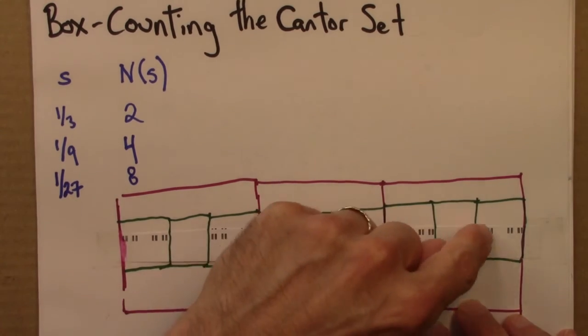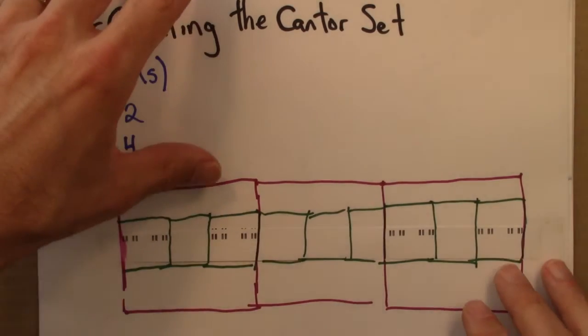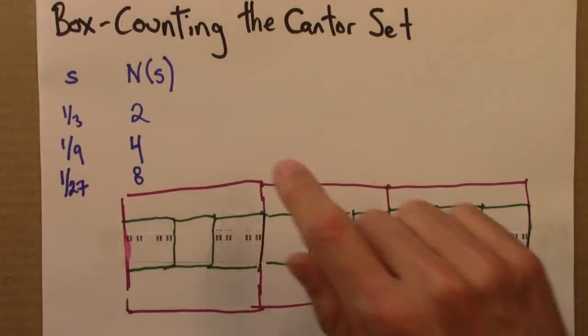One, two, three, four, five, six, seven, eight. Alright. So then the question is, what does this tell us about the dimension?